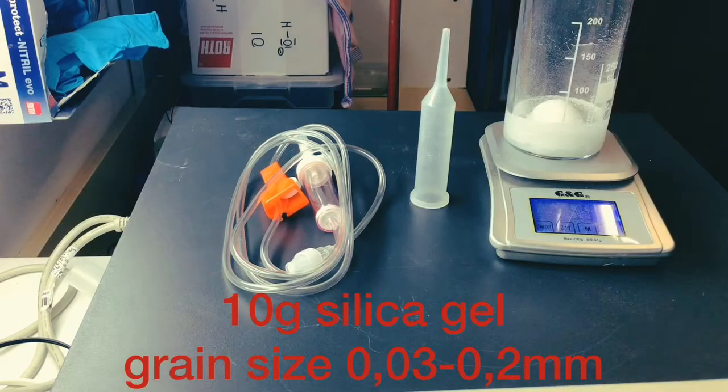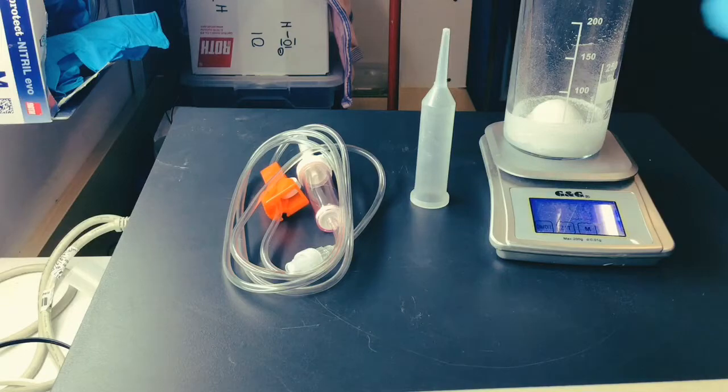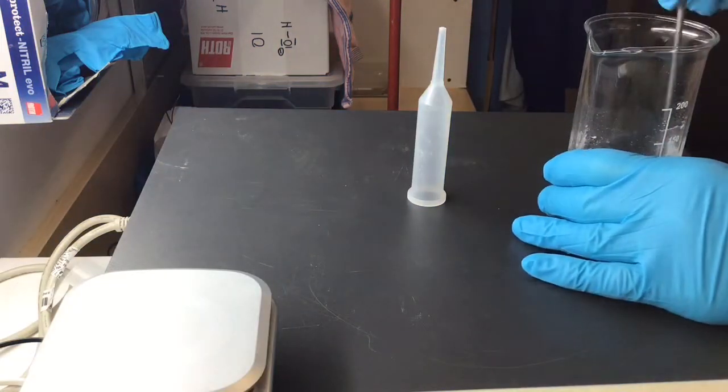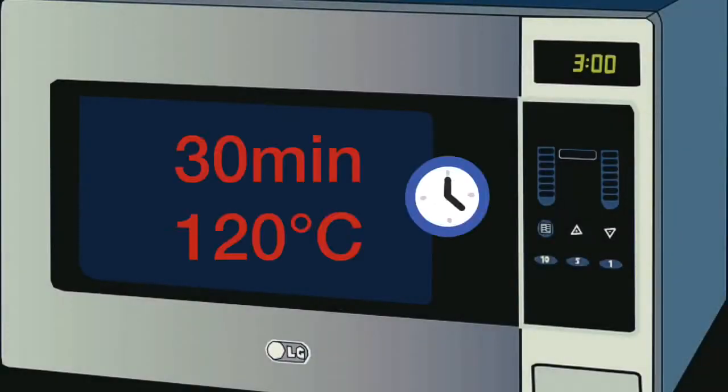Add 10 grams of silica gel and mix it with the oil. For drying, incubate in the oven for 30 minutes at 120 degrees centigrade.